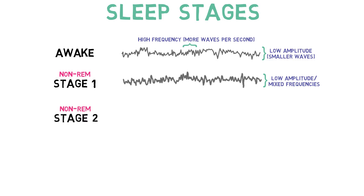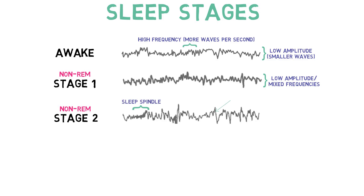Stage 2 sleep is characterized by the presence of phenomena on an EEG known as sleep spindles and K-complexes. Sleep spindles are trains of high-frequency waves. A K-complex involves a biphasic wave that stands out from the rest of the EEG.